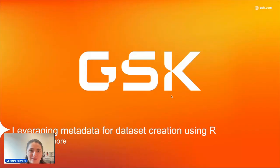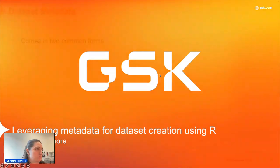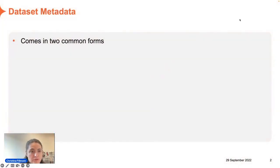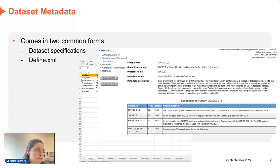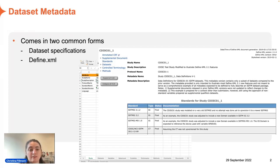The most common places you get metadata from are dataset specifications — probably the most common thing everyone's used to — and the define XML, which contains a lot of the same information in a different format that we end up giving to the FDA. Both of these are really rich in things helpful for creating a dataset, like which variables go in which dataset, what controlled terminology should be, labels, and so on.